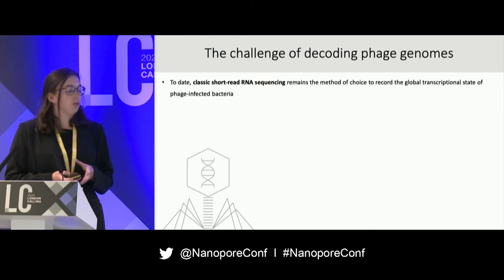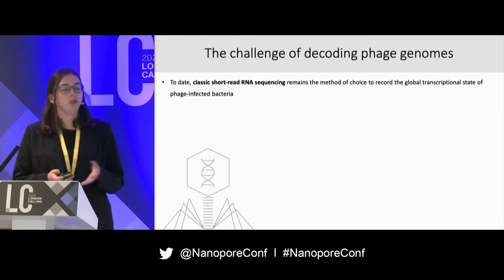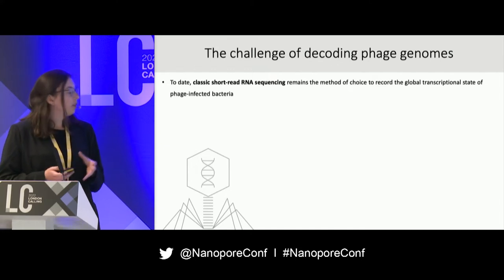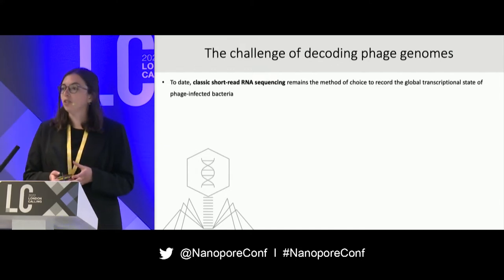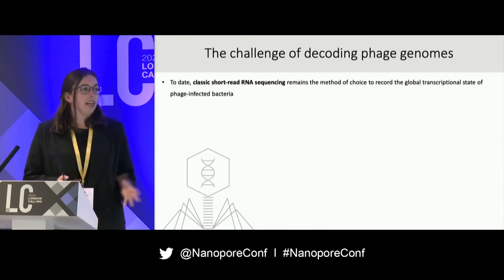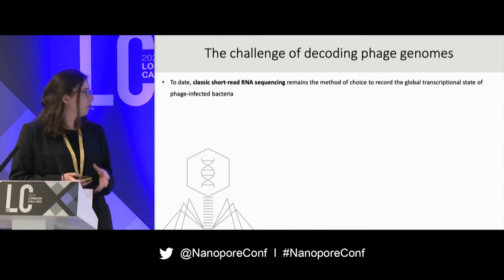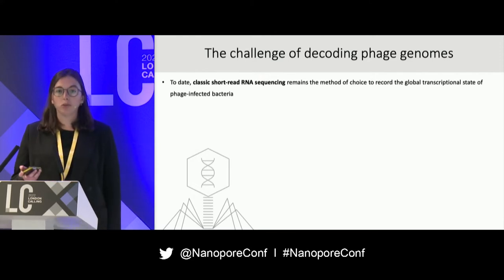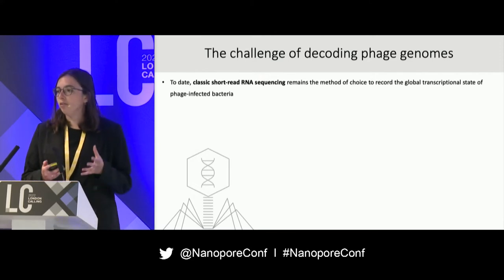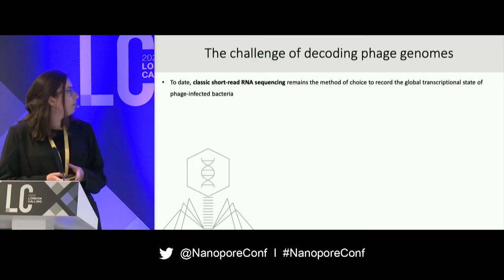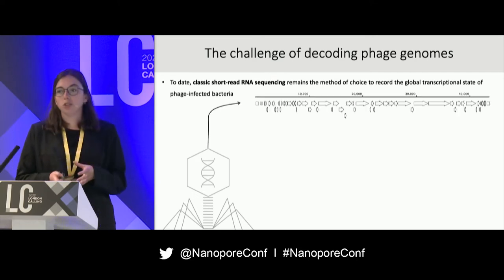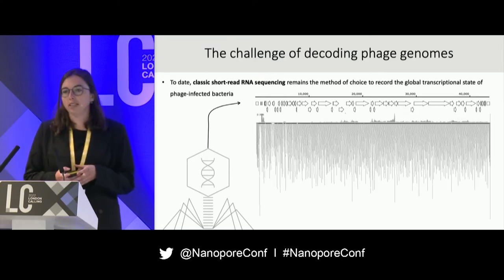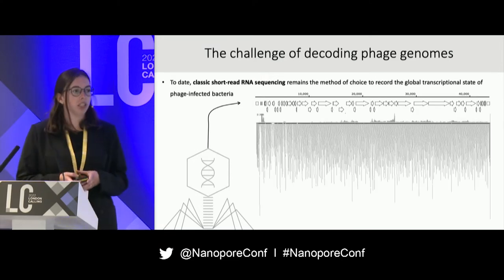Nowadays, phage transcriptomics is still mainly driven by Illumina-based approaches. But one of the main challenges of working with phages or viruses in general is that they have incredibly compact genomes, which makes it much more difficult to understand what is happening on a transcriptome level. Here you can see the genome of a phage we have been working with in our lab and the transcriptome data we get from Illumina sequencing.